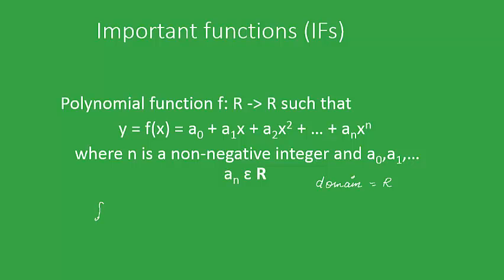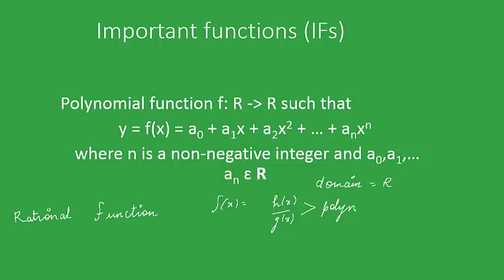Here is another type of function called rational functions. Rational functions are defined as f(x) equals h(x) over g(x), where h(x) and g(x) are both polynomial functions. The domain of f(x) is the set of all x where g(x) is not equal to 0, since if g(x) turns out to be 0, the function f(x) is not defined.